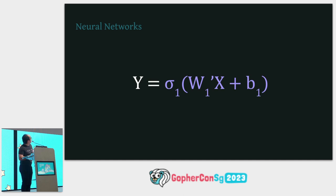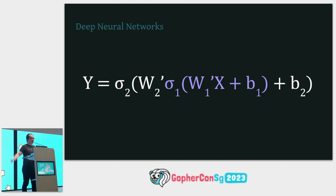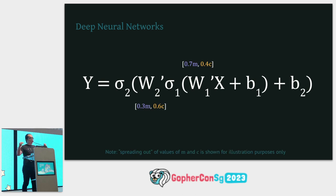This is a neural network. A deep neural network is simply this stacked on top of each other many, many times. You can run the same linear regression using a deep neural network, except now your M and C's are spread across multiple W's and B's. It turns out this is very useful for large language models, as we'll see when we talk about generalization later.